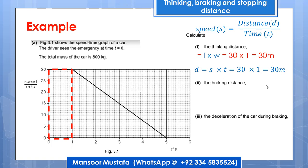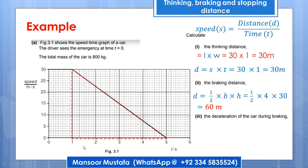For the braking distance, this corresponds to the triangular area on the graph — from where the driver applies the brake until the car comes to rest. The area of a triangle is one-half multiplied by base multiplied by height. An important note: many students make the mistake of taking the base as 5. But this triangle does not start from zero — it starts from 1. So the base is 5 minus 1, which equals 4.